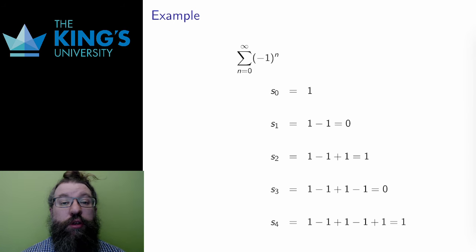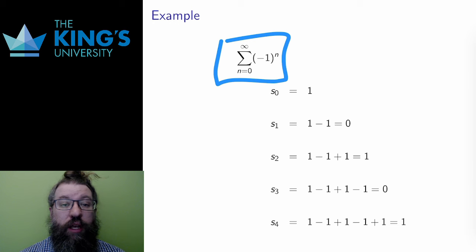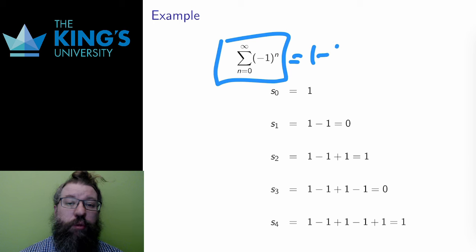First, I'll start with an alternating series. This is the sum of negative 1 to the n. So here I'm just adding positive and negative terms: 1, minus 1, plus 1, minus 1, plus 1, minus 1, plus 1, minus 1.